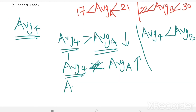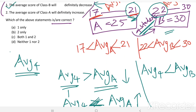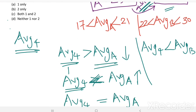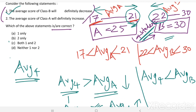If the average of those four students equals the class average, then the average will remain the same. So there are three possibilities: class A's average either increases, decreases, or remains the same. Therefore, the second statement — that the average score of class A will definitely increase — is incorrect. Only statement 1 is correct. Option A is the right answer.